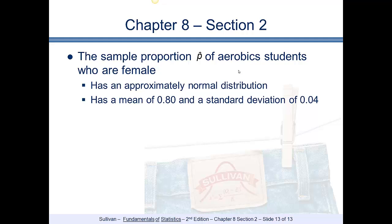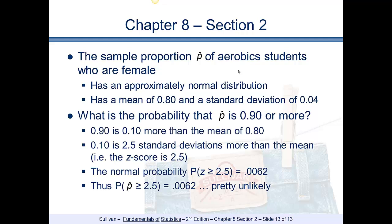Since the sample proportion is approximately normal with a mean of 0.80 and a standard deviation of 0.04, we want to find the probability that p-hat is 0.90 or more. Since 0.90 is 0.10 more than 0.80, we compute: (0.90 minus 0.80) divided by 0.04, which gives us 2.5. The probability that z is greater than 2.5 — looking that up on the table and subtracting from 1 because we're looking at the right-hand tail — is 0.0062, or about 0.62% of the time, which is pretty unlikely.